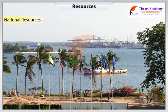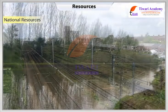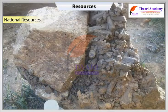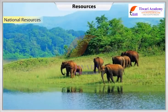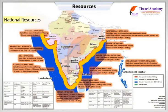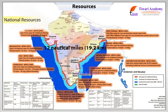National resources: technically all resources belong to the nation. Urban Development Authorities get empowered by the government to acquire land for constructing roads, canals, railways, etc. All minerals, water resources, forests, wildlife, land within the political boundaries, and oceanic area up to 12 nautical miles (19.2 km) from the coast — termed as territorial water — and resources therein belong to the nation.